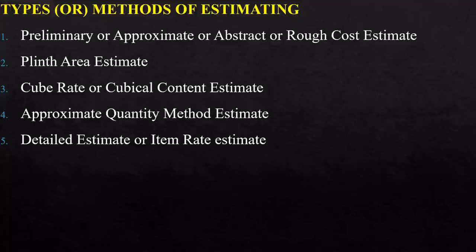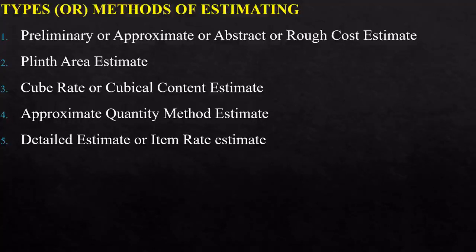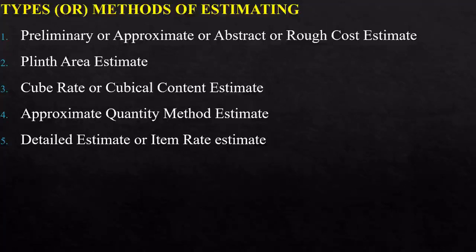The fifth type of estimate is called a detailed estimate or item rate estimate for each item. This detailed estimate is an accurate estimate. It consists of working out the quantities of each item of works — you find each item, then multiply the cost for each item. The dimensions, namely length, breadth, and height of each item, are taken from the drawings, quantities for each item are calculated, and abstracting is done. The detailed estimate has two stages: first, details of measurements and calculation of quantities; second, calculation of cost.